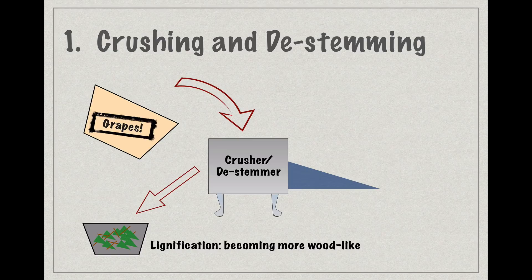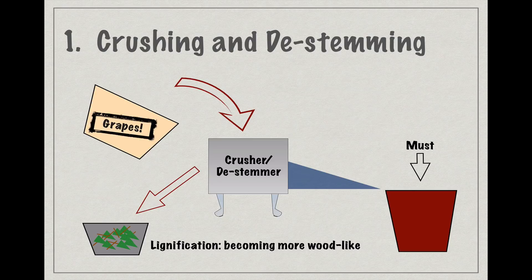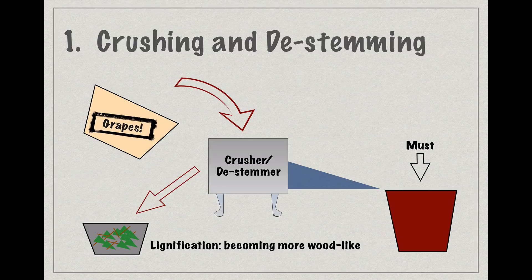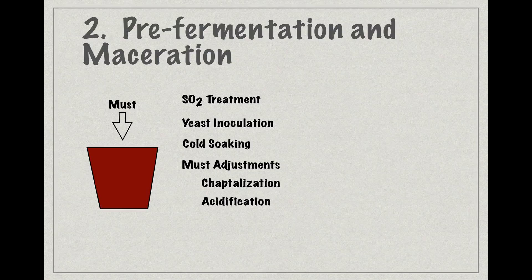If the winemaker does de-stem and opts not to add back any stems, then the stemless crushed grapes and their juice form a slurry called must that runs down an inclined table to a pump where it can be transferred to a bin or a tank. Once in a fermentation vessel like a bin or a tank, the must can undergo a number of procedures before fermentation begins, all of which are optional and depend in large part on the type of wine that the winemaker wants to craft.